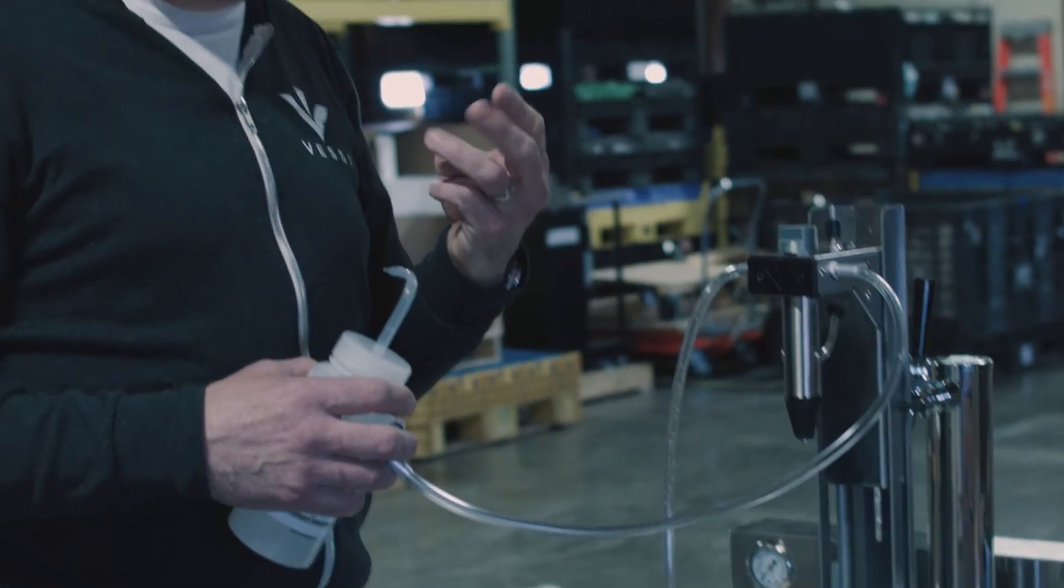We recommend you do that three times: first time with cleaning solution, the second time with clean tap water to rinse it out, and then a third time with sanitizing solution to make sure that all the parts of the bottler are sanitized prior to putting beer into the bottles.